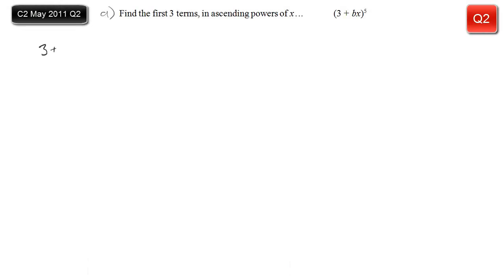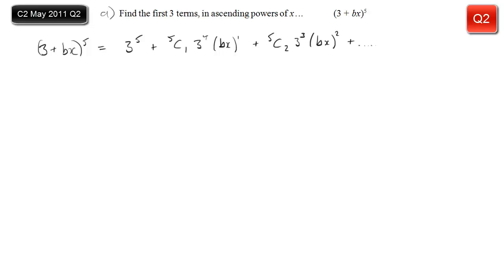This is a fairly typical binomial expansion question: (3 + bx) to the power of five. The first term is always the first part of your bracket to the highest power — three to the power five. Then we have 5 choose 1, three to the power four, bx to the power one, introducing bx. The next term is 5 choose 2, three cubed, bx squared — and note the brackets, they're important. In each term the sum of the two powers must be five.